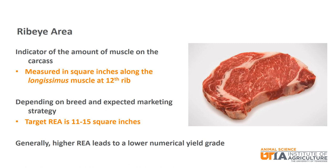Rib eye area is an indicator of the amount of muscle on the carcass. It is measured in square inches along the longissimus muscle at the 12th rib. Depending on breed and expected marketing strategy, the target rib eye area is 11 to 15 square inches. Generally, the higher the rib eye area, the lower the numerical yield grade.